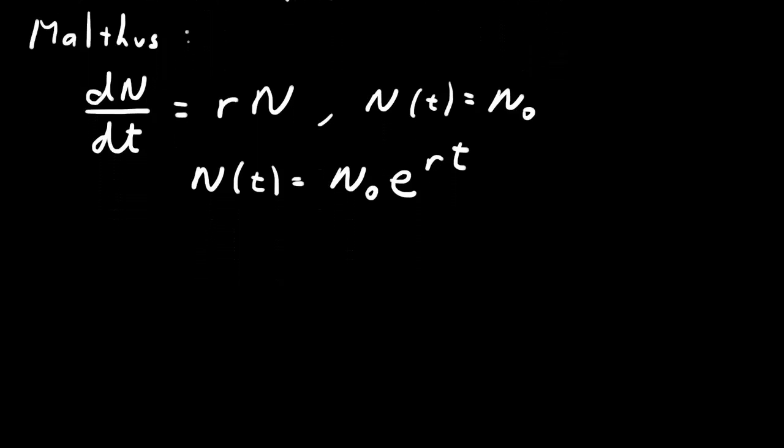Malthus is famous for saying that if populations grow exponentially, then eventually people will run out of food and there will be mass starvation. Now if you have a population that is limited by its environment, it can't grow exponentially forever.